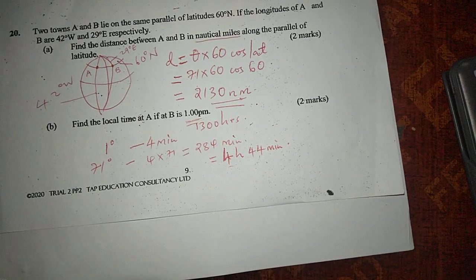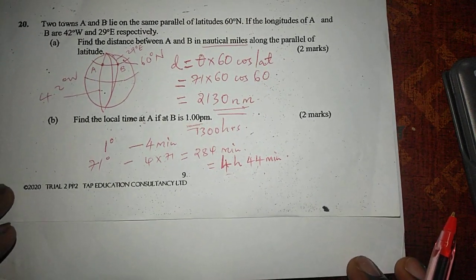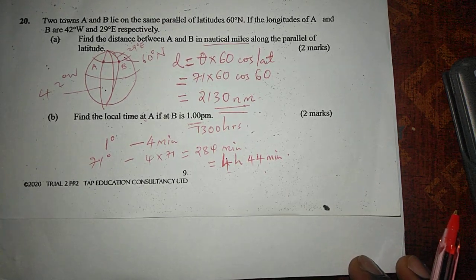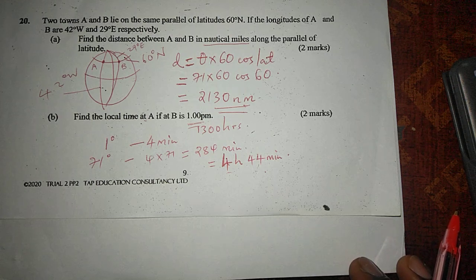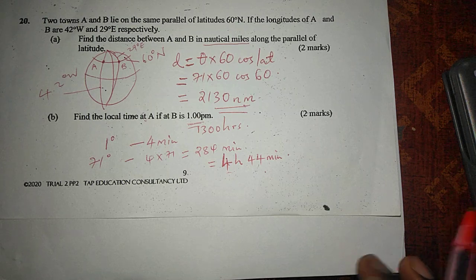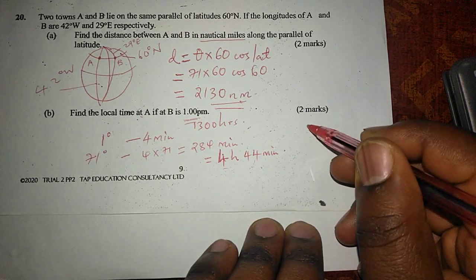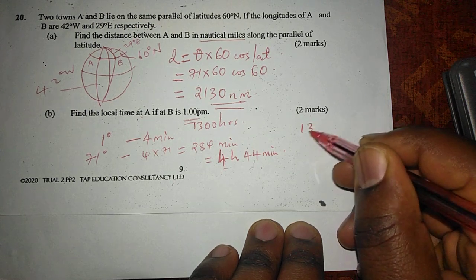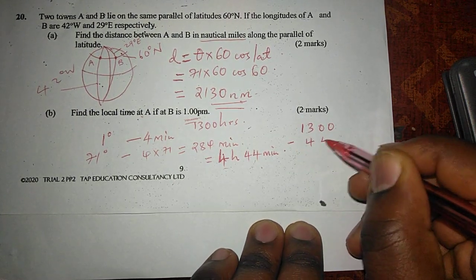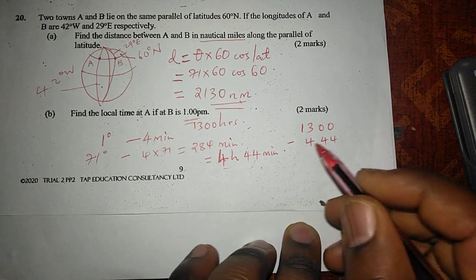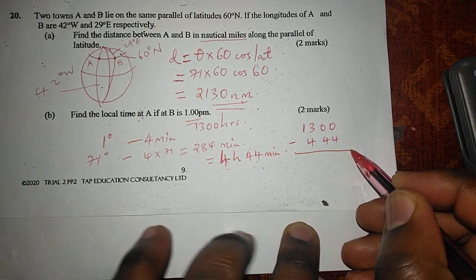But now, A is behind in time when we compare it with B. So because B is ahead of time by 4 hours and 44 minutes, then it means A is behind by the same time. And we are going to take the time of B, because it is ahead, and we subtract the time difference so that we may get the time at A.